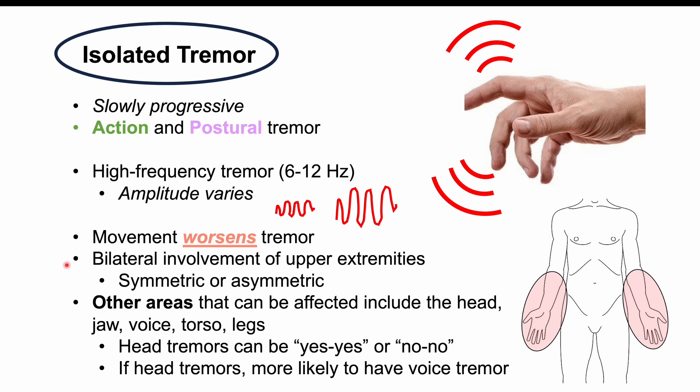In some cases there can be voluntary control of the tremor, more likely in mild cases, where the tremor can be suppressed by skilled manual tasks. The tremor can also resolve during sleep. The tremor is seen mostly in the arms and hands, but in about 30% of cases it can occur in other parts of the body such as the head and jaw.